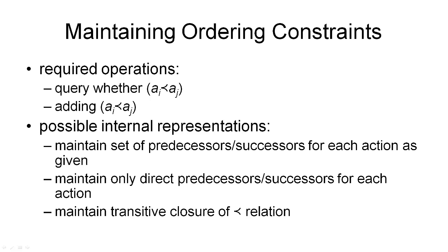During our plan space search, we maintain a set of ordering constraints. Here are a few words on the implementation of ordering constraints. In fact, you could see the ordering constraints as an independent module that can be plugged into our planner, and that has two access operations that we need to support. The first one is, we need to query whether an action in our plan must come before another action.